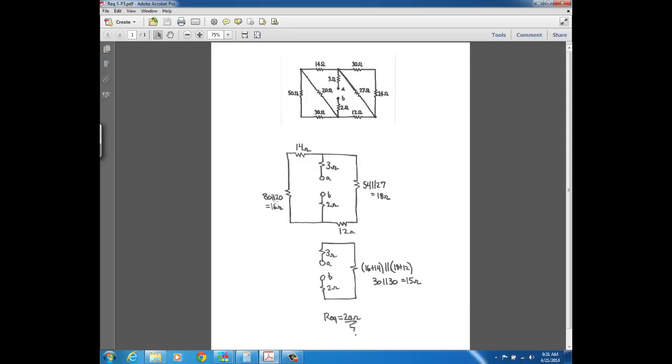So now, once you have these reductions, the 16 and the 14 just have one path. So they're in series. And then the 12 and 18 just have one path for current to flow between them. So they're in series. So we now have two 30 ohm resistors.